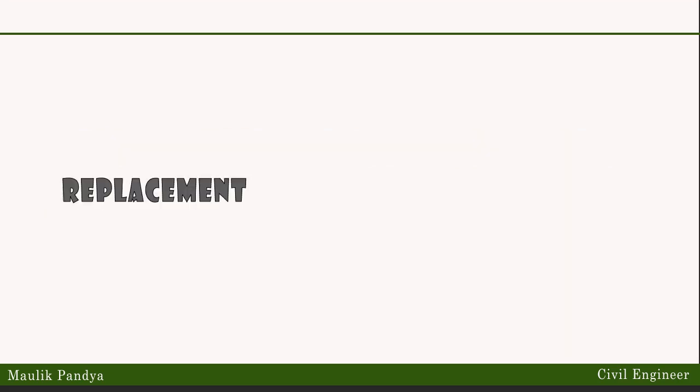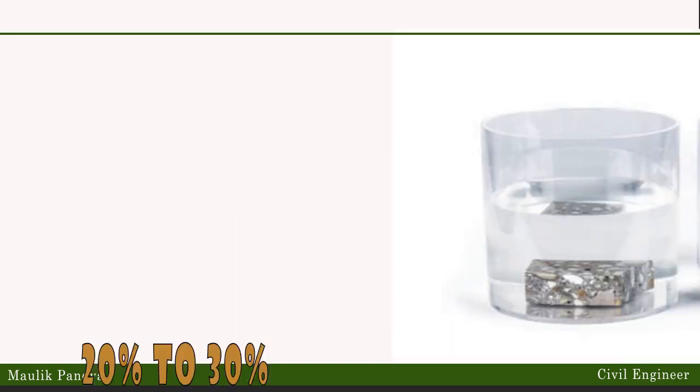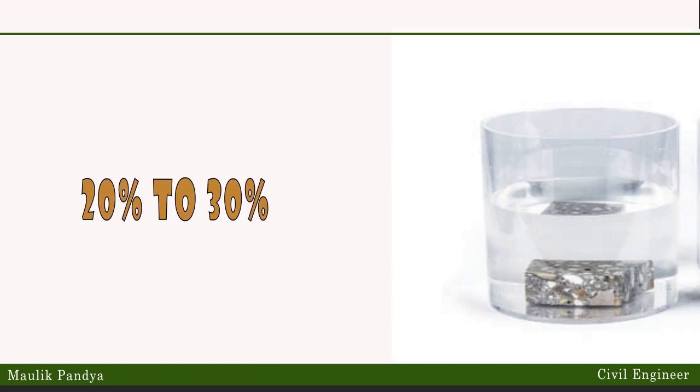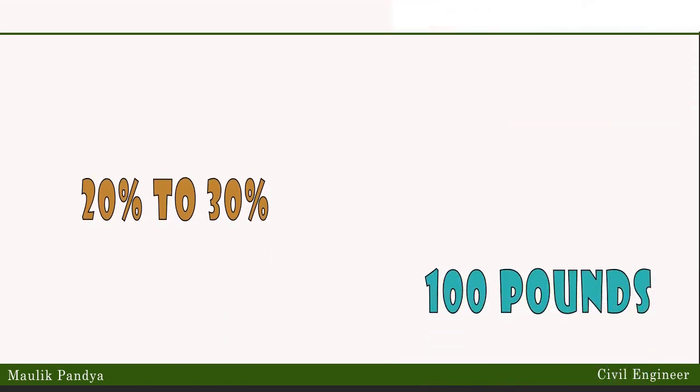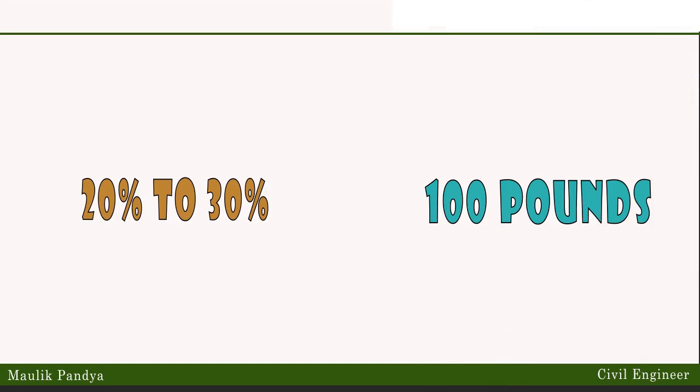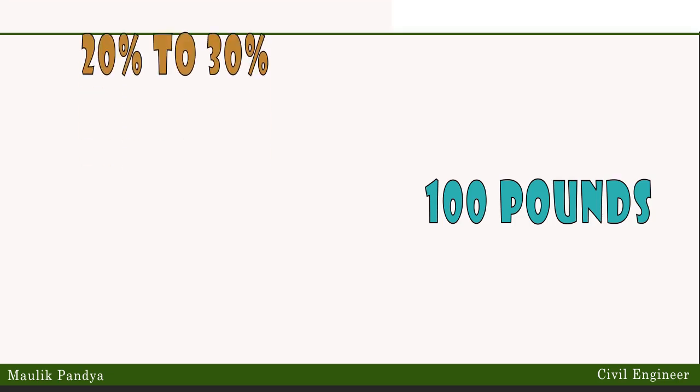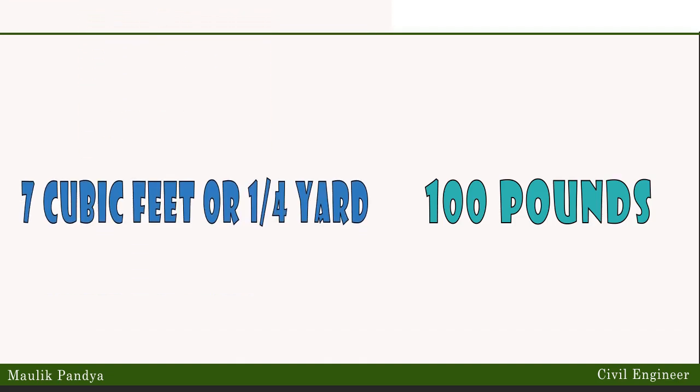Replacement by volume is key, as expanded glass is nearly five times lighter than silica sand. Once you know your replacement ratio, you are ready to mix and cast. Expanded glass uptakes water at a rate of 20 to 30% by mass. 100 pounds of dry expanded glass will absorb 20 to 30 pounds of water — which is actually minimal absorption when you consider that 100 pounds of expanded glass is 7 cubic feet, or one quarter yard, of material.